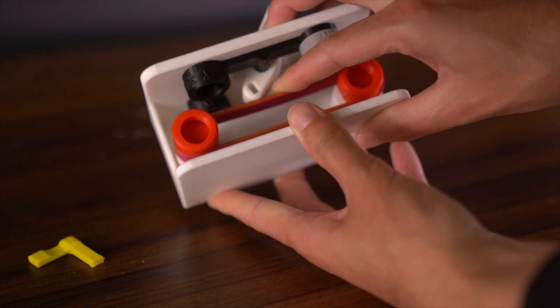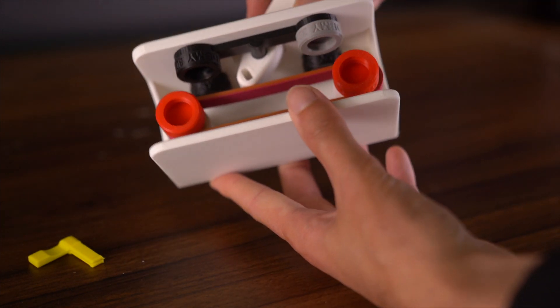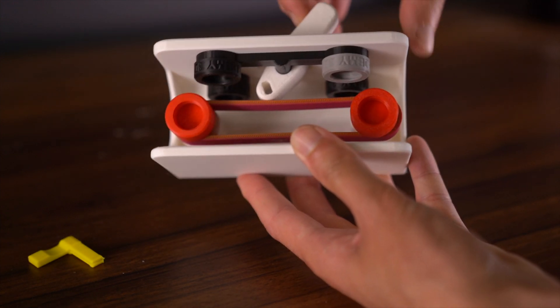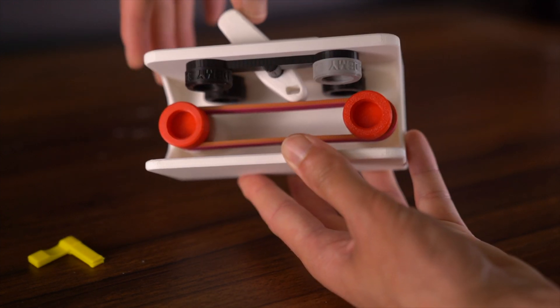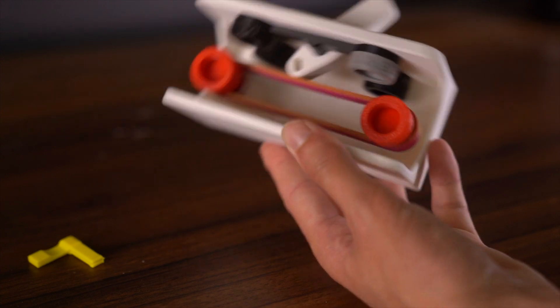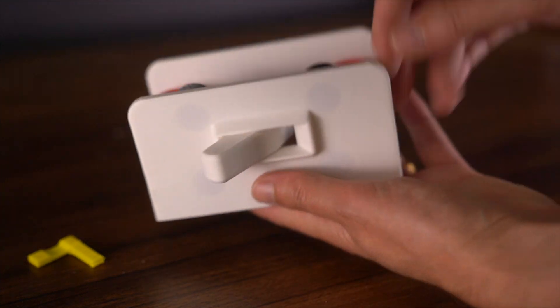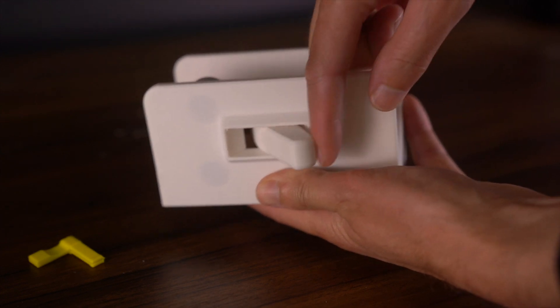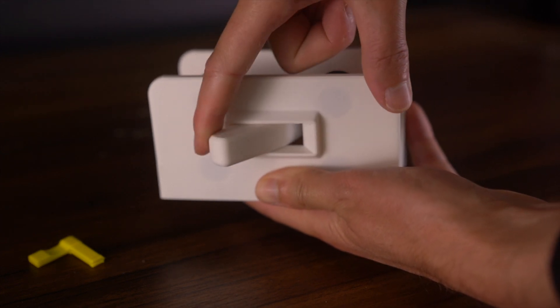Essentially, what's happening is the spring is forcing the switch to either be in the on or off position. This is what's called a bi-stable mechanism. It sounds complicated, but if you just break it down, bi means two. So the mechanism wants to be in two different stable points, either on or off.